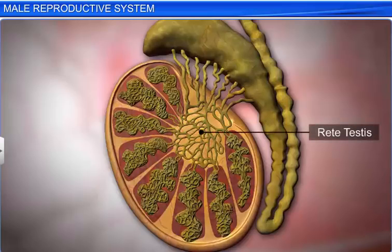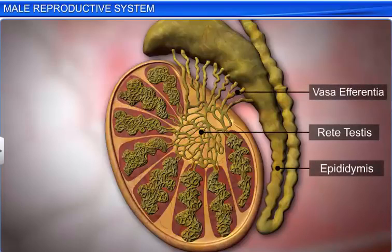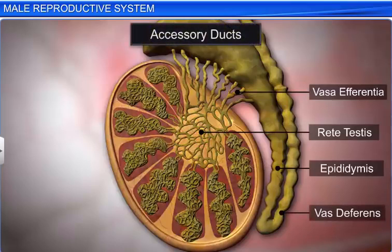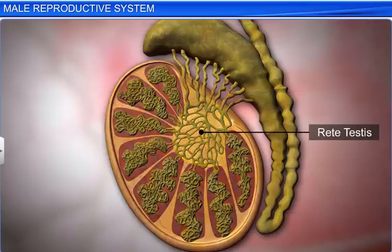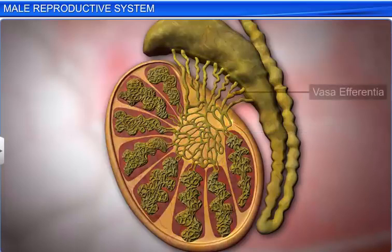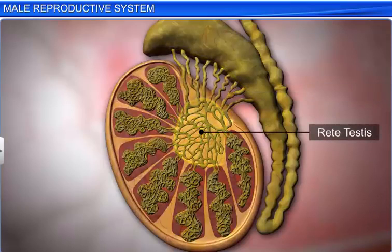The rete testis, vasa efferentia, epididymis, and vas deferens are the male accessory ducts. The rete testis is a network of ductules formed by the seminiferous tubules. Vasa efferentia are ciliated ductules that arise from the rete testis. They collect sperms and transfer them to the epididymis.